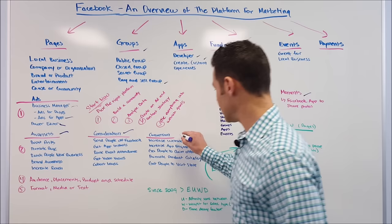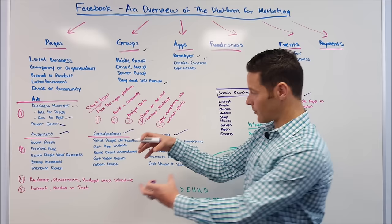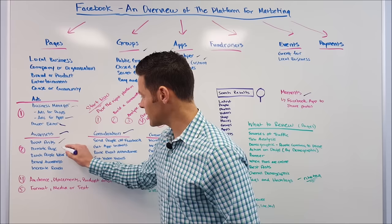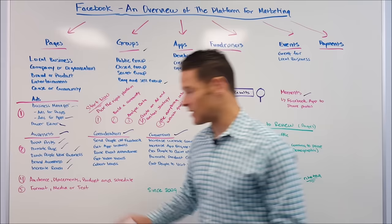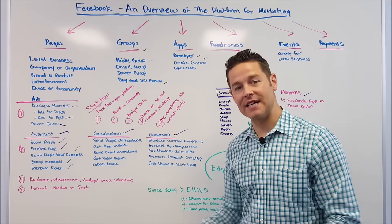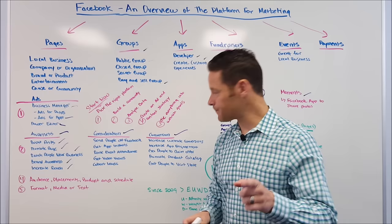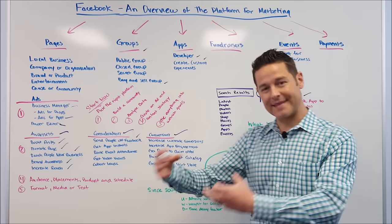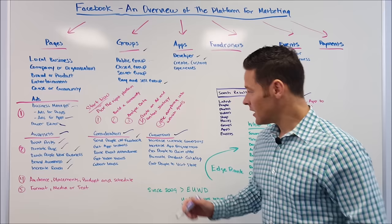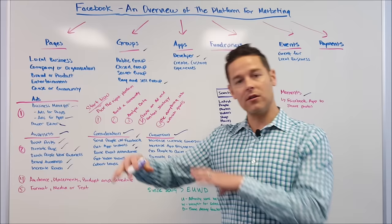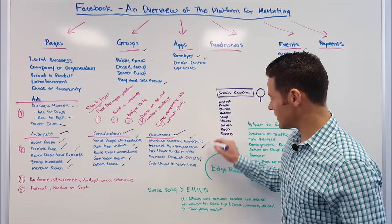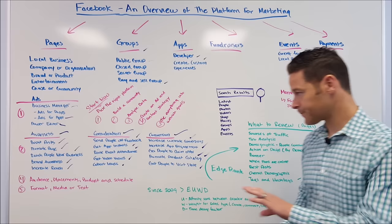Facebook has broken ads into three buckets: awareness, consideration, and conversions. For awareness, you can boost posts, promote your page, reach people near your business, create brand awareness, or increase retention. On the consideration side, you can send people off Facebook to your website or landing page, get app installs, raise event attendance, get video views, or collect leads. Facebook has done a good job laying these out so you can pick the intent you're looking for, and any good marketer needs to have clear goals.